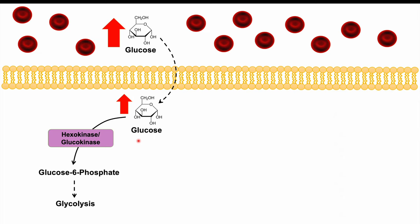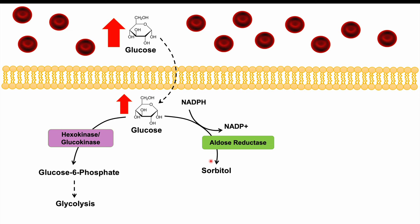Even with high intracellular glucose, some can still go through glycolysis. However, high glucose also activates aldose reductase, initiating the sorbitol pathway: glucose is converted to sorbitol using one NADPH. In cells that have sorbitol dehydrogenase, that sorbitol is then converted to fructose, generating NADH.